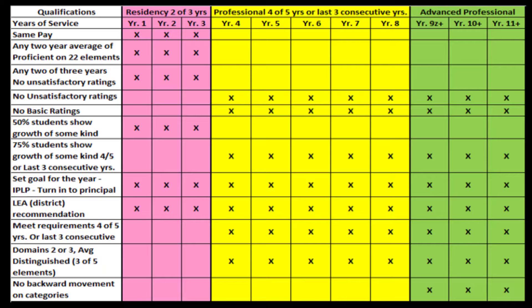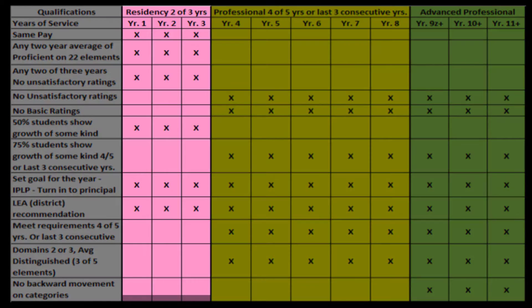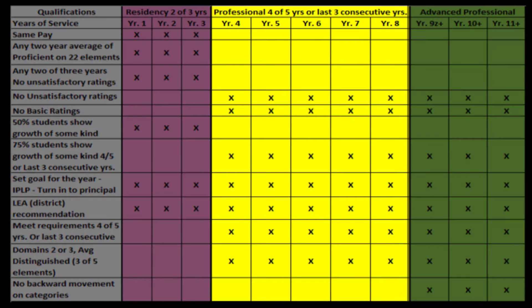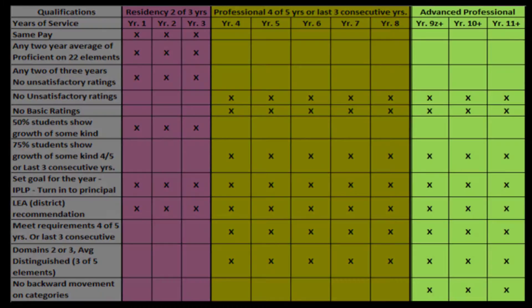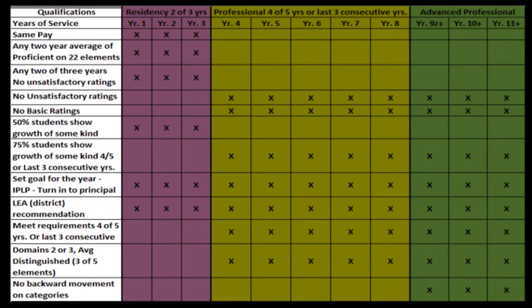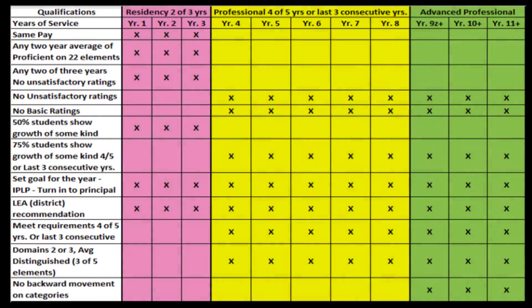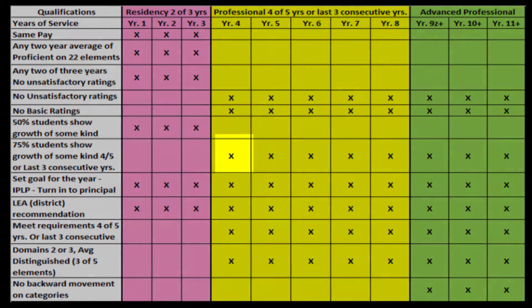Every teacher will be in one of these three categories: the residency, shown here in pink; professional, in yellow; and the advanced, in green. The qualifications for each are listed vertically in white. For each qualification required, you will see an X in the cell of this chart.